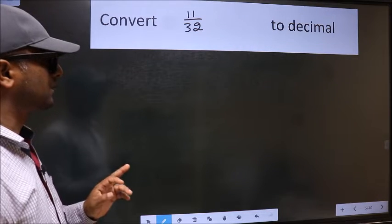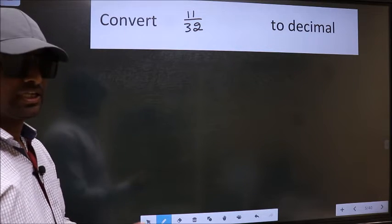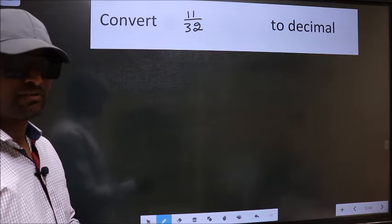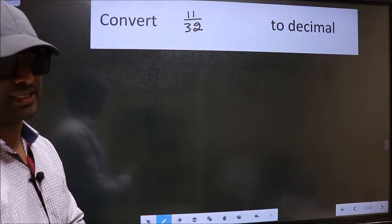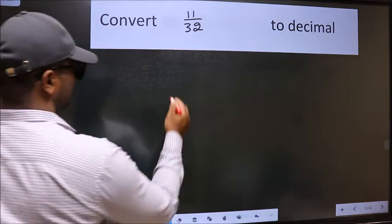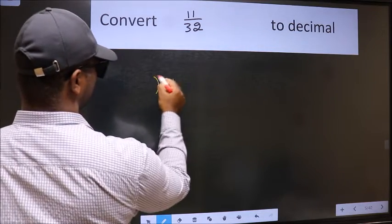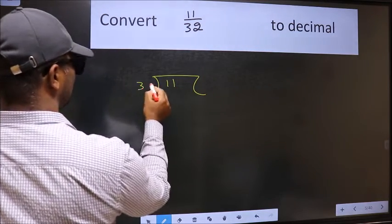Convert 11 by 32 to decimal. To convert to decimal, we should divide it. And to divide, we should frame it in this way: 11 here and 32 here.